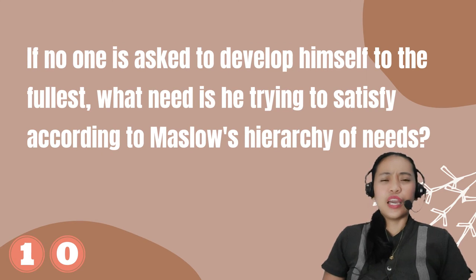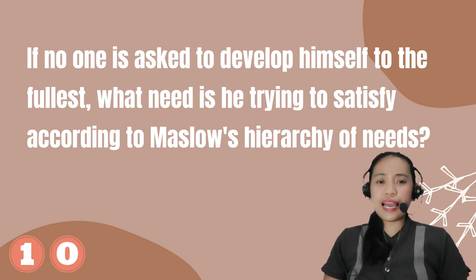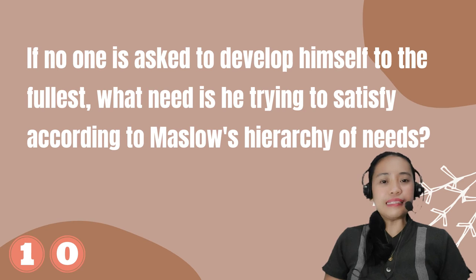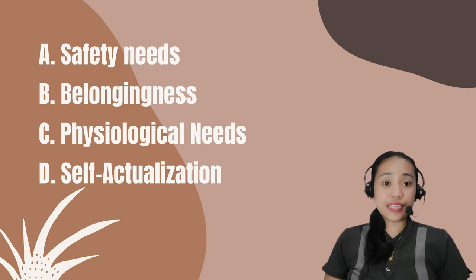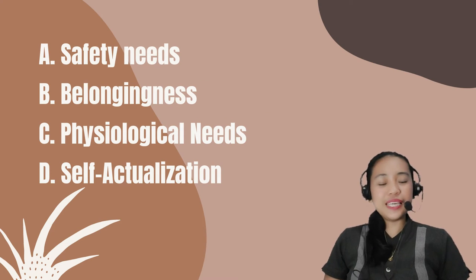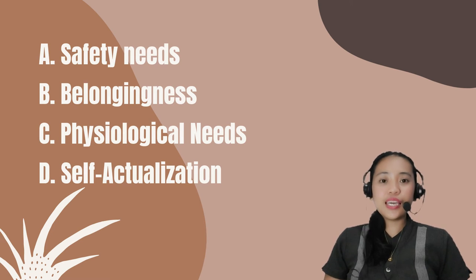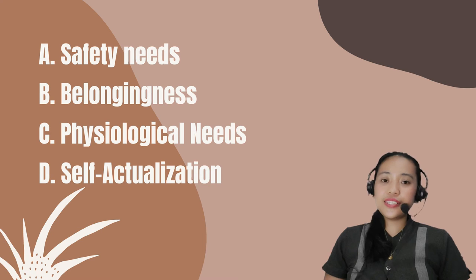Number 10. If a person is asked to develop himself to the fullest, what need is he trying to satisfy according to Maslow's hierarchy of needs? A. Safety Needs. B. Belongingness. C. Physiological Needs. D. Self-actualization.